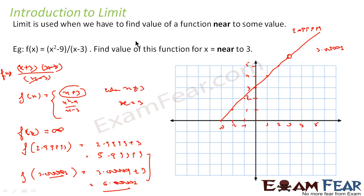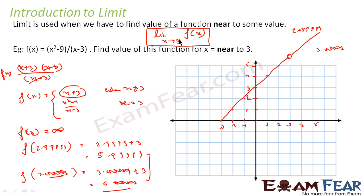The notation we use is: limit as x approaches 3 of f(x). Since in this example the point of interest is 3, we write x → 3. In the general formula we write x → a, where a can be any value. In our case a = 3, so we write x → 3.